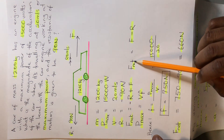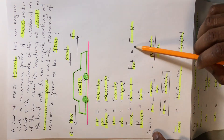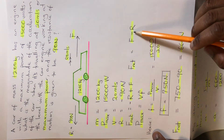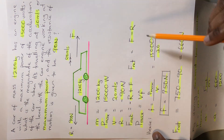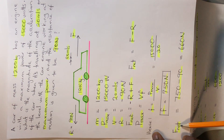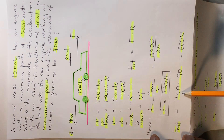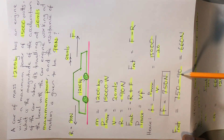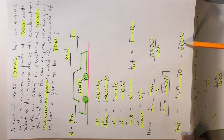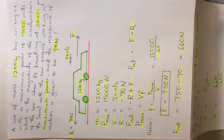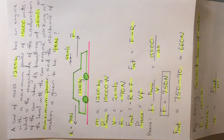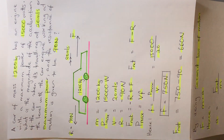Using the formula F_net equals driving force minus resistance, we have F_net equals 750 minus 90, which gives us 660 Newtons.